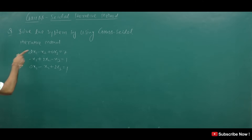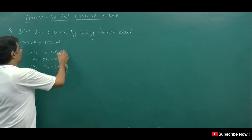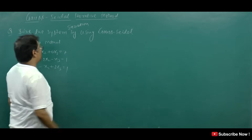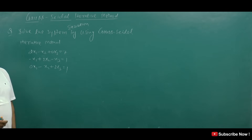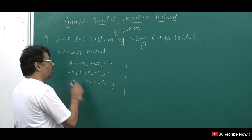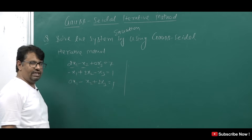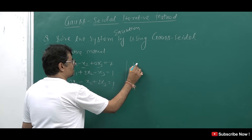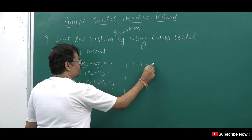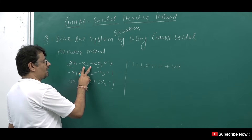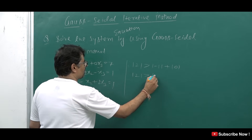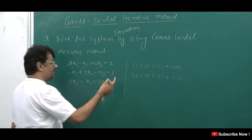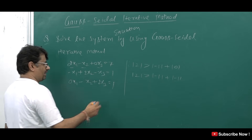So the question is: solve the system of equations by using Gauss-Seidel Iterative Method. First, I will tell you the method. When you use this method, you have to check the coefficients of x1, x2, x3. For each equation, one coefficient — like x1's coefficient — must be greater than the sum of the other two coefficients in that equation. Similarly, x2's coefficient must be greater than the other two, and x3's coefficient must be greater than the remaining two. This is the diagonal dominance condition.